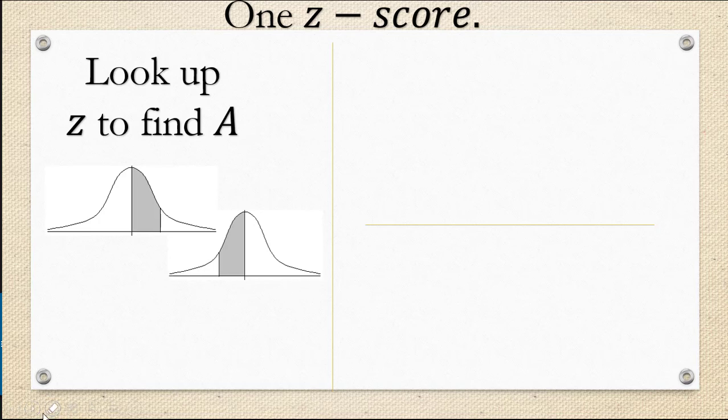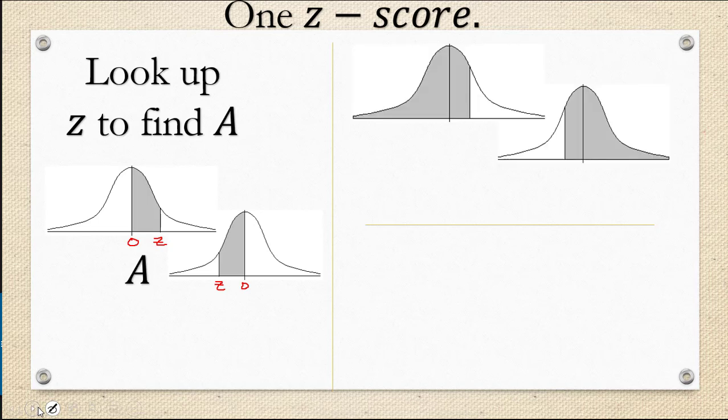If you're being asked to find the area of the region between zero and the z-score regardless of whether the z-score is positive or negative, then the area you're looking for is the one that you looked up on the table and you're done.